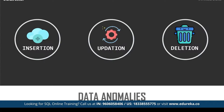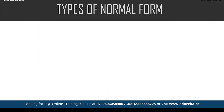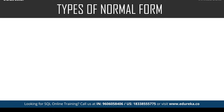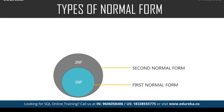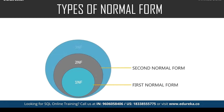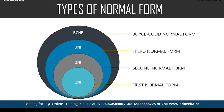These were some of the problems that occurred while managing data. To eliminate all these anomalies, normalization came into existence. There are many normal forms still under development, but let's focus on the basic and essential ones: first normal form, second normal form, third normal form, and Boyce-Codd normal form.